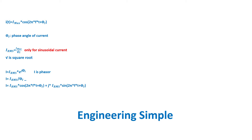The RMS value of the current is equal to the peak value of the current divided by the square root of 2. This is only valid for sinusoidal currents — you cannot use this equation for non-sinusoidal currents.